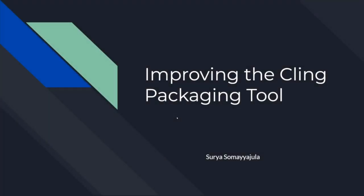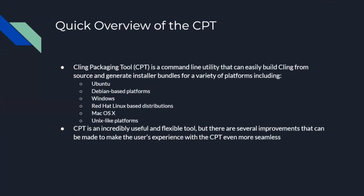So this past summer at IRIS-HEP, I worked on improving the Cling packaging tool. The Cling packaging tool is a command line utility that can easily build Cling from source, and it generates installer bundles for many operating systems and platforms — for example, Ubuntu, Debian-based platforms, Windows, Red Hat Linux-based distros, macOS, and Unix-like platforms. It's a very useful and flexible tool, but there were several improvements that I made to the user's experience with the CPT.